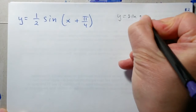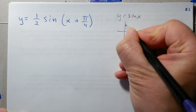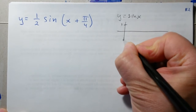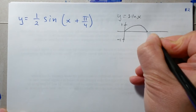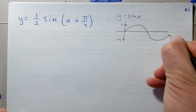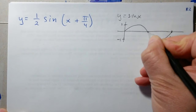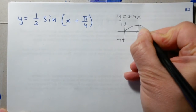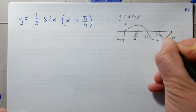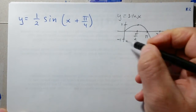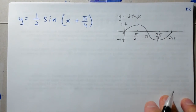Our base function will be y equals sine x. Let's do a rough sketch — you should know this by heart. It goes positive one, negative one; you start at zero, go to the top, then go down and go all the way. It takes two pi to complete one cycle; halfway will be pi, halfway between these will be pi over two, and this would be three pi over two. That's zero as reference.